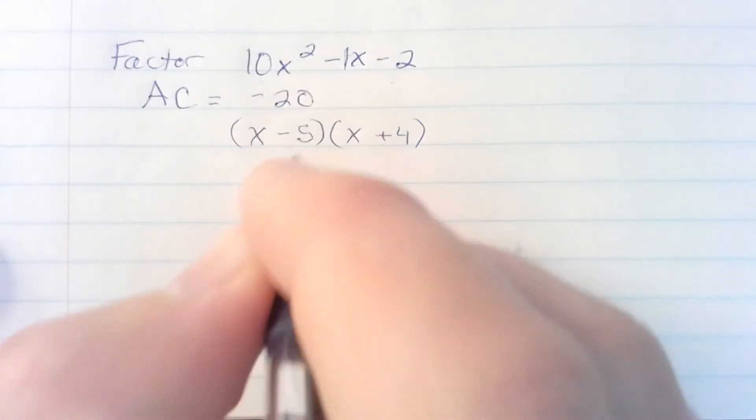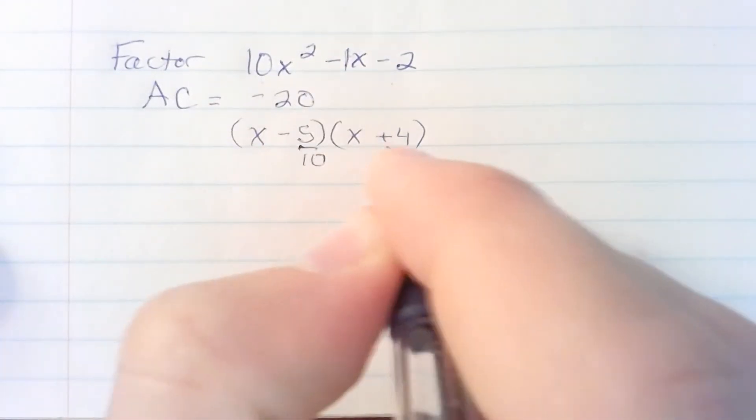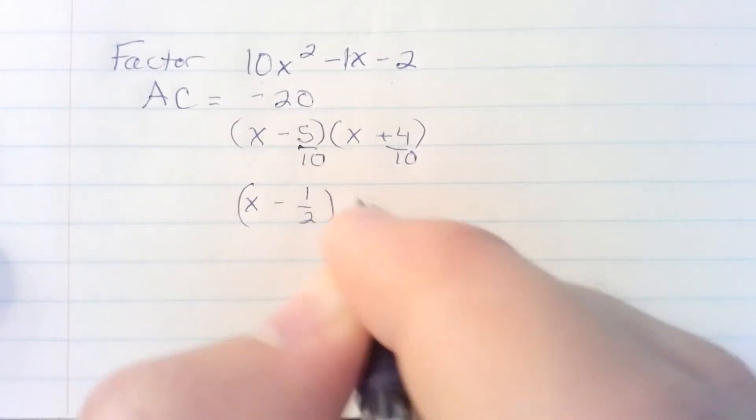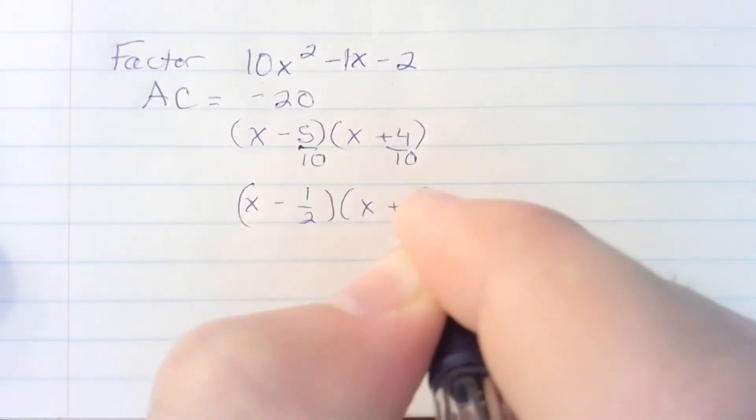I go back to the A term 10 and divide each term by it. If I can reduce the fraction I will. In this case 5 over 10 is 1 over 2. 4 over 10 reduces to 2 over 5.